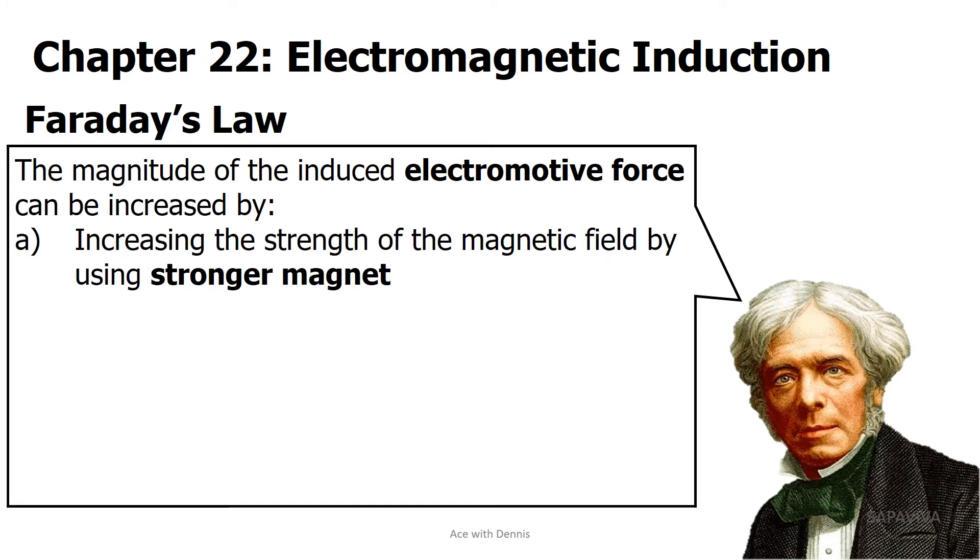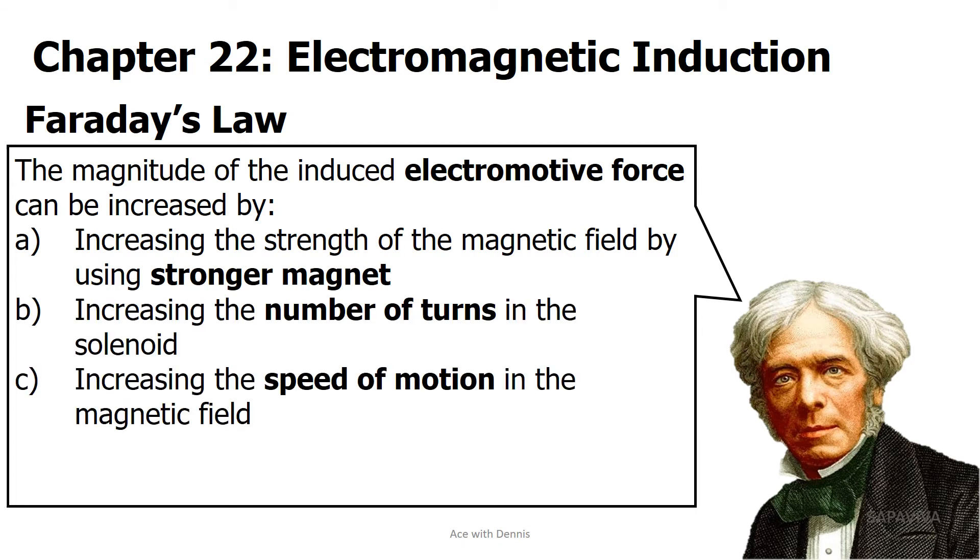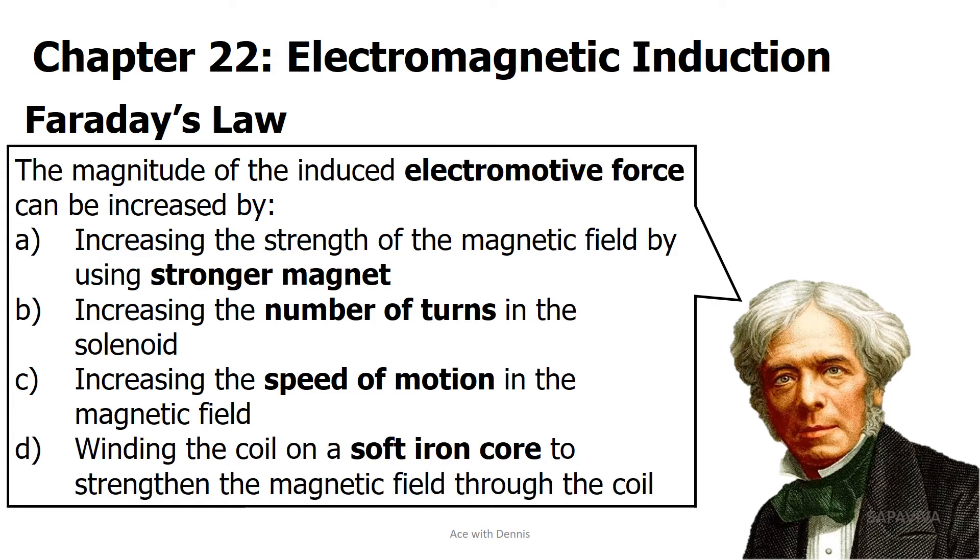Increasing the strength of the magnetic field by using stronger magnet; increasing the number of turns in the solenoid; increasing the speed of motion in the magnetic field; and winding the coil on a soft iron core to strengthen the magnetic field through the coil.